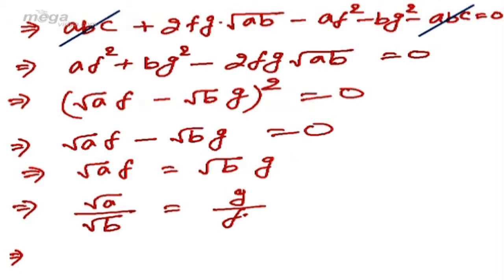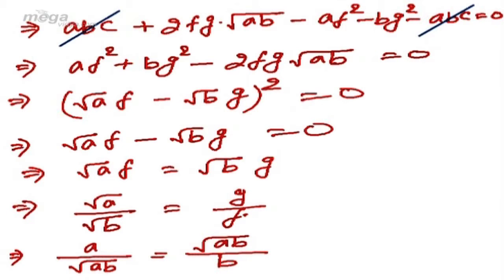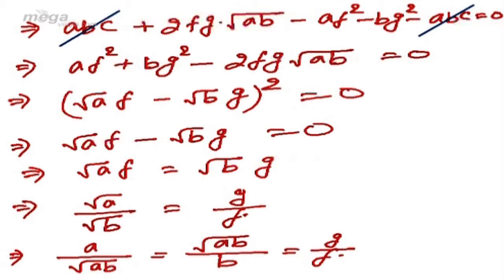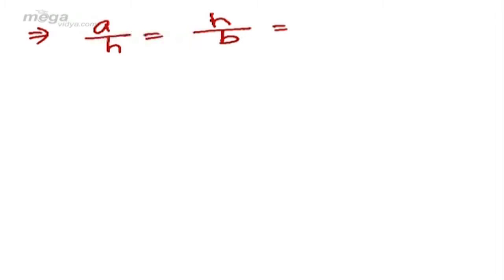Multiplying numerator and denominator appropriately: √a / √b = a / √(ab) and also = √(ab) / b. Since h² = ab, we have √(ab) = h. Therefore a/h = h/b, and both equal g/f.